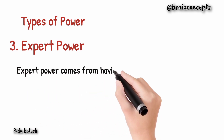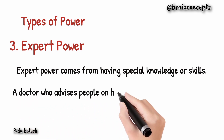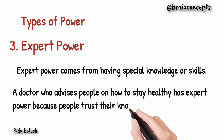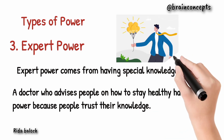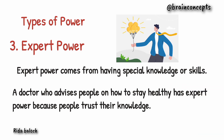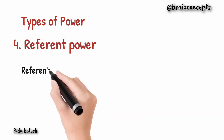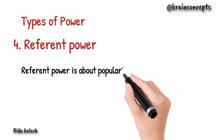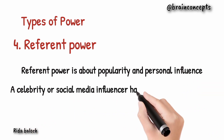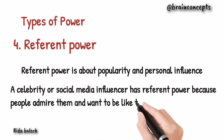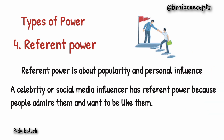Expert power comes from having special knowledge or skills. For example, a doctor who advises people on how to stay healthy has expert power because people trust their knowledge and abilities. The fourth type is referent power. Referent power is about popularity or personal influence. A celebrity or social media influencer has referent power because people admire them and want to be like them.